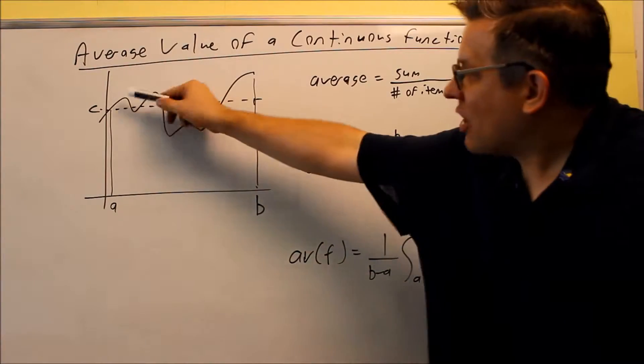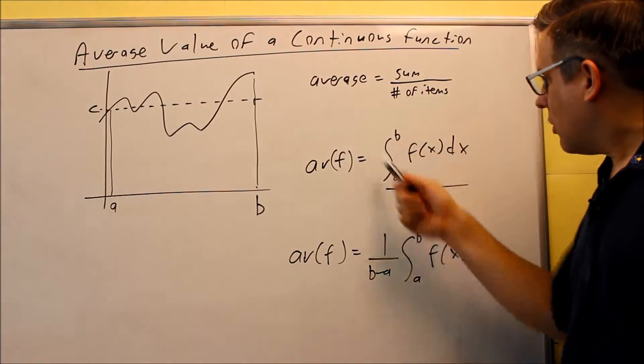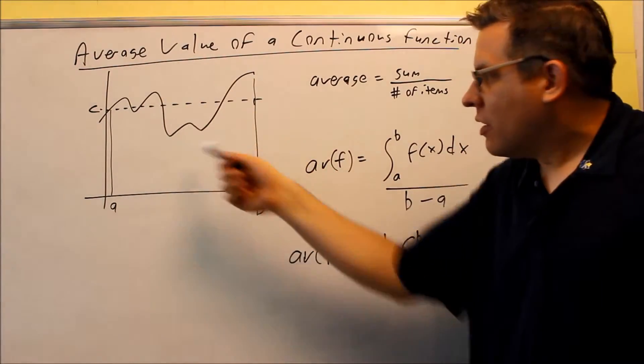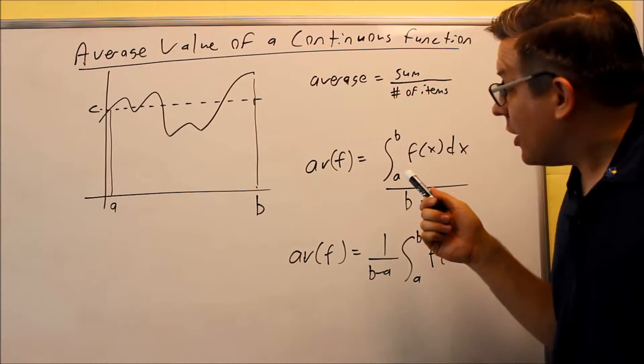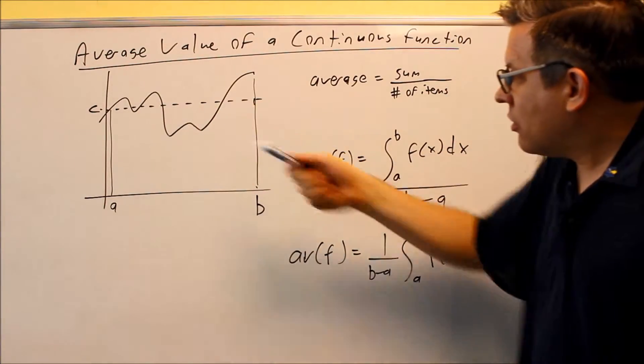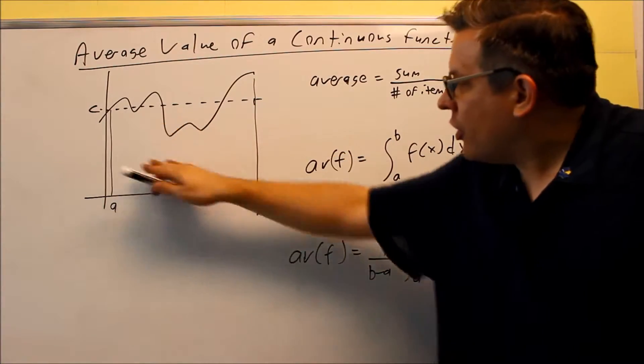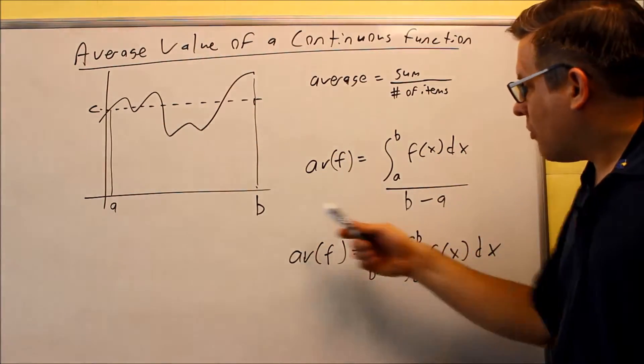So the sum of all the different heights, that actually just ends up being, has to do with the integral here, definite integral between A and B. That's going to give you the base of the area underneath the graph here.